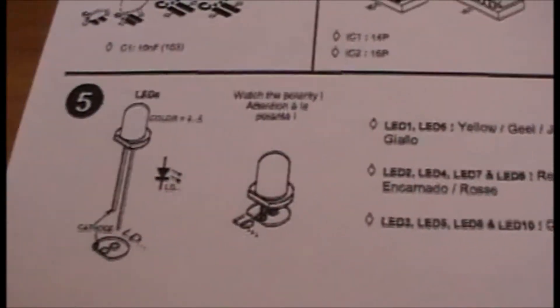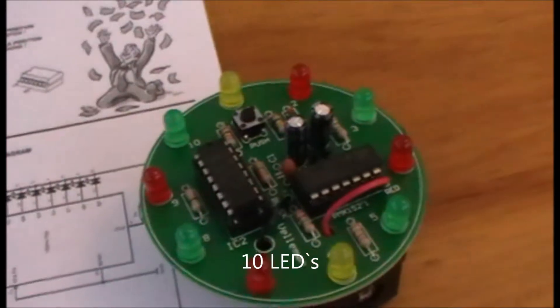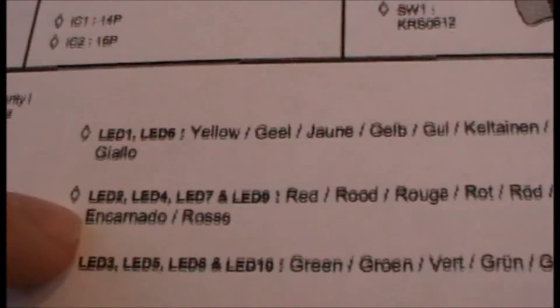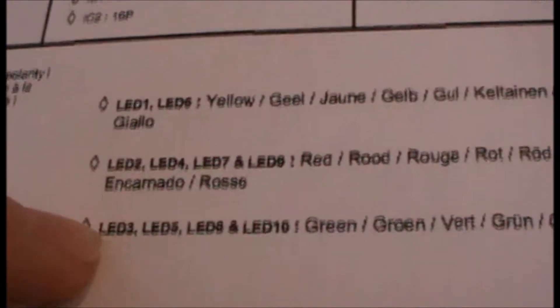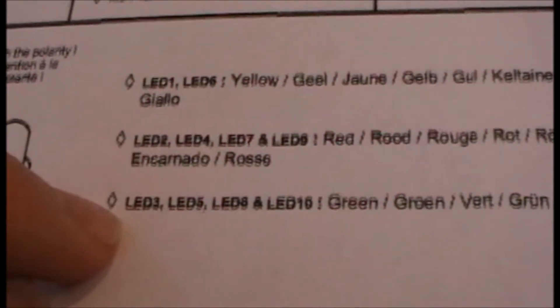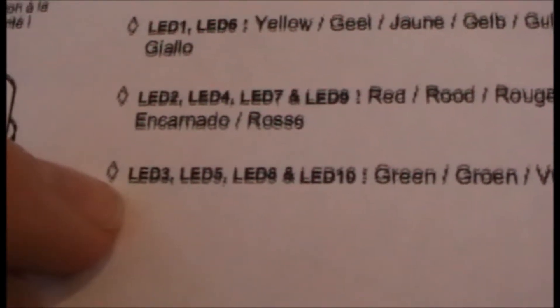Then the 10 LEDs, all around the outside of the board. The yellow LEDs go in LED1 and LED6. The red LEDs go in LED2, LED4, LED7, and LED9. And the green LEDs go in LED3, LED5, LED8, and LED10.